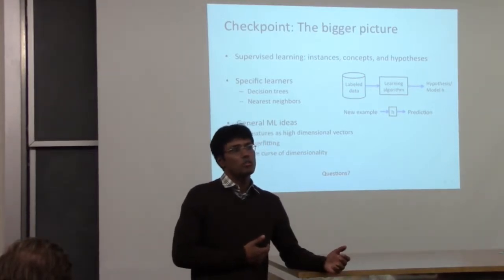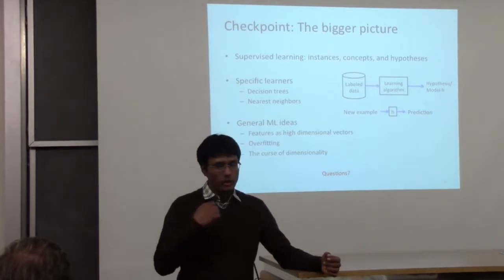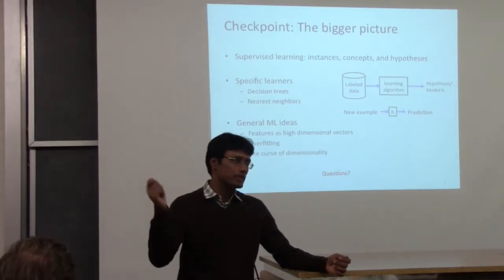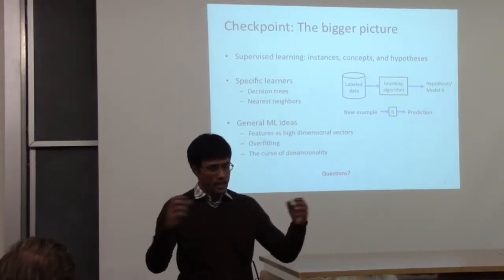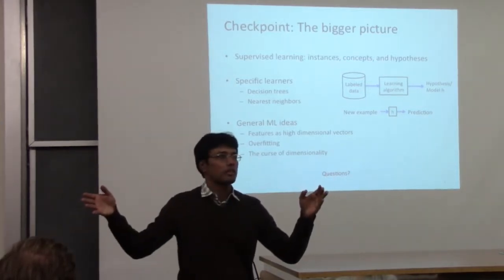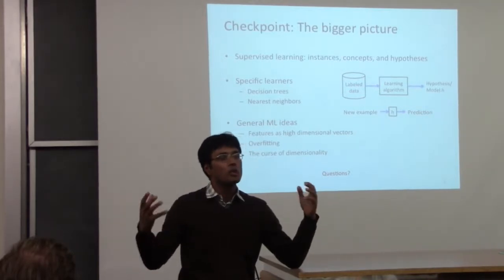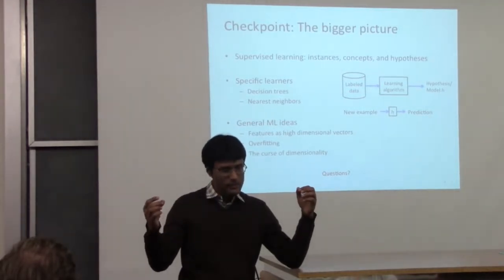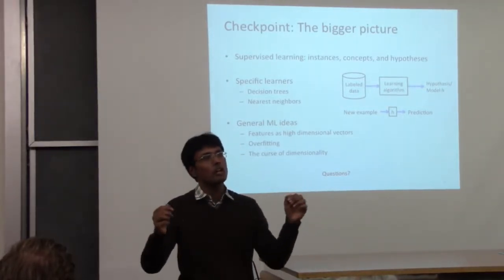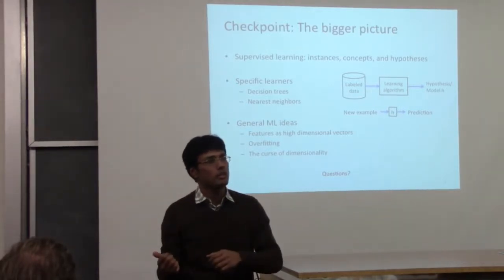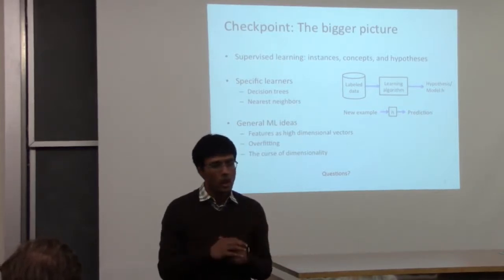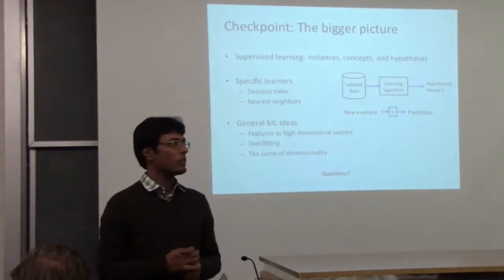In decision trees, generalization works by breaking down the label into a series of questions, one for each node. Instead of looking at a particular record having a label, you break it down column-wise. New examples may share some of these column values — not an exact match, but similar enough — and you'll get the same label, enabling predictions for inputs you've never seen before. We'll talk about a more mathematical definition of generalization in a later lecture.